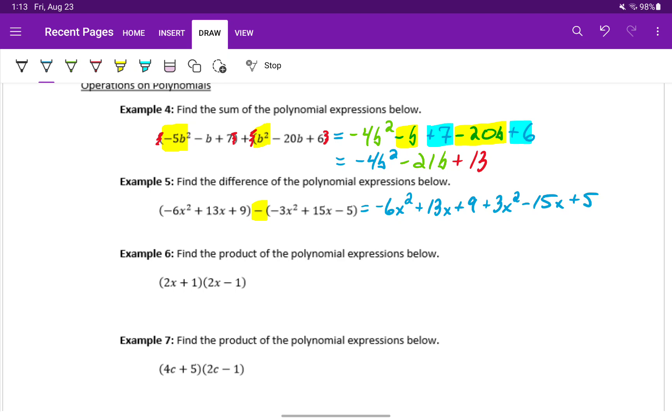And then again, we can combine like terms by looking at the variable component. If the variable component is the same, we can simply add those coefficients together. Negative 6 plus 3 will end up giving us negative 3x squared. 13 minus 15 will give us negative 2x. And then 9 plus 5 will give us 14.